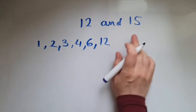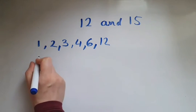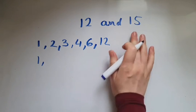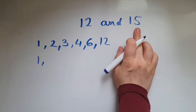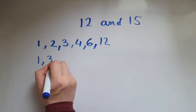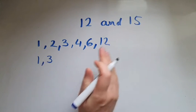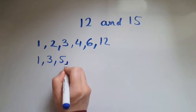Now let's look at factors of 15. 1 is a factor of it, because 1 times 15 gives us 15. 2 is not, because you can't divide 15 by 2 and have a whole number as the answer. What about 3? Yes, because 3 times 5 gives us 15. 4 is not. 5 is a factor.